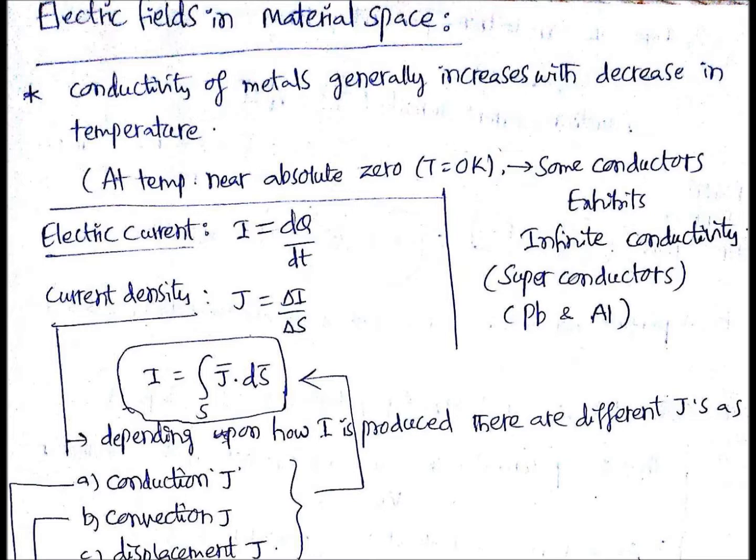The basic definition of electric current is the rate of change of charge, that is dq/dt. Current density is the change in current per unit change in surface area. If you integrate on both sides, you get the integral over surface S of J·dS.